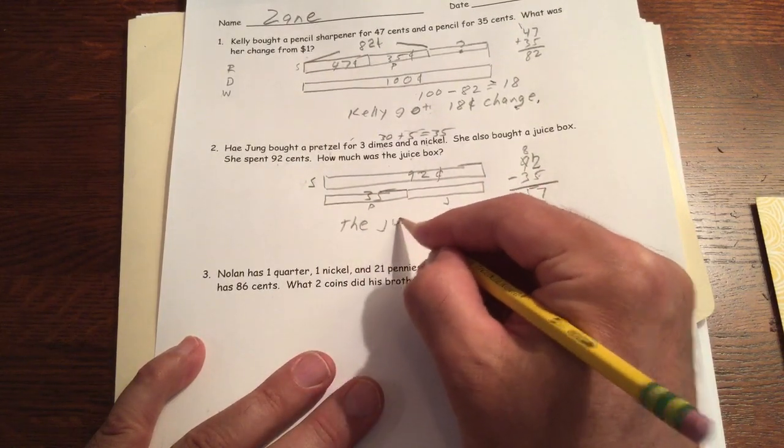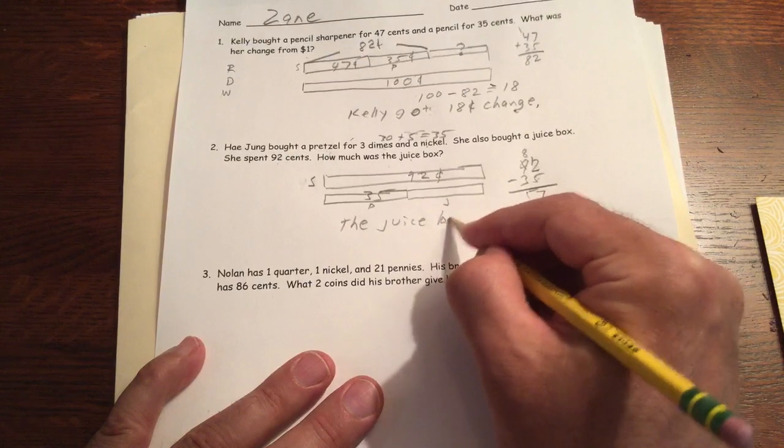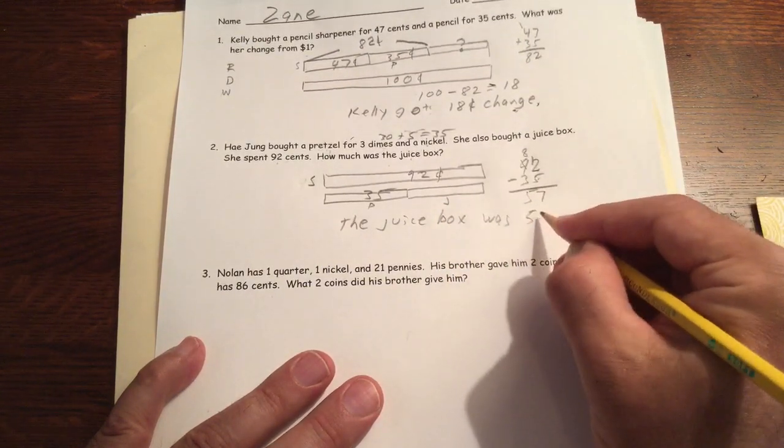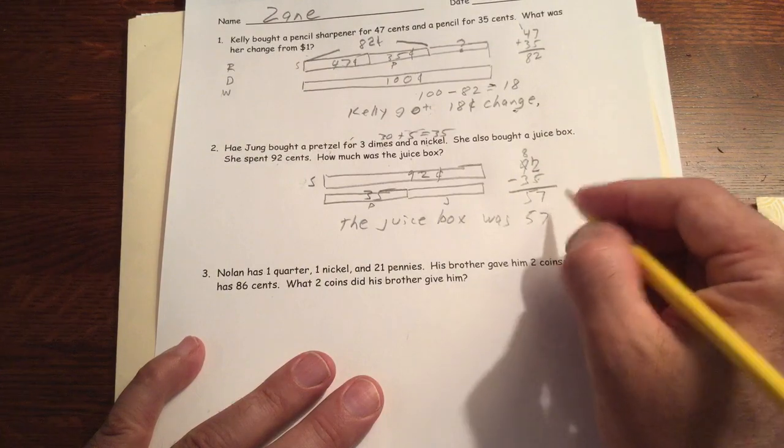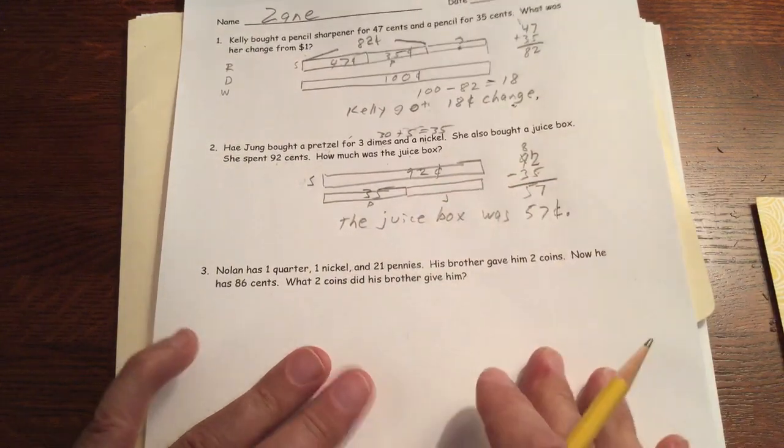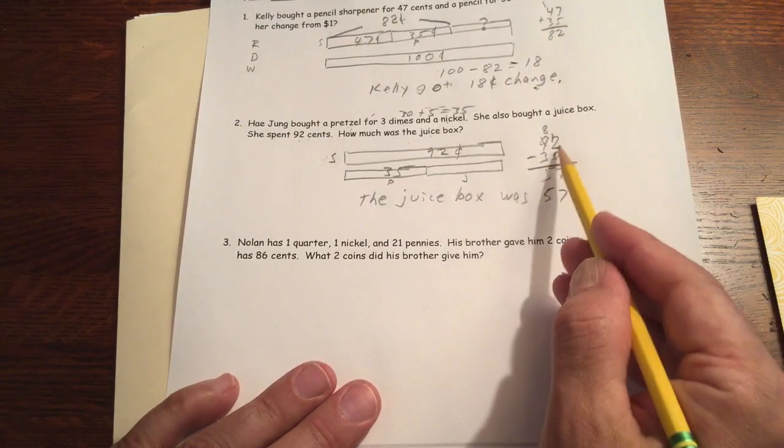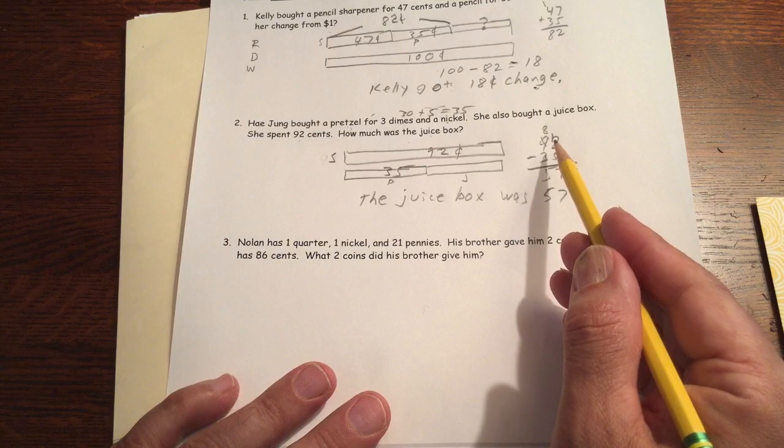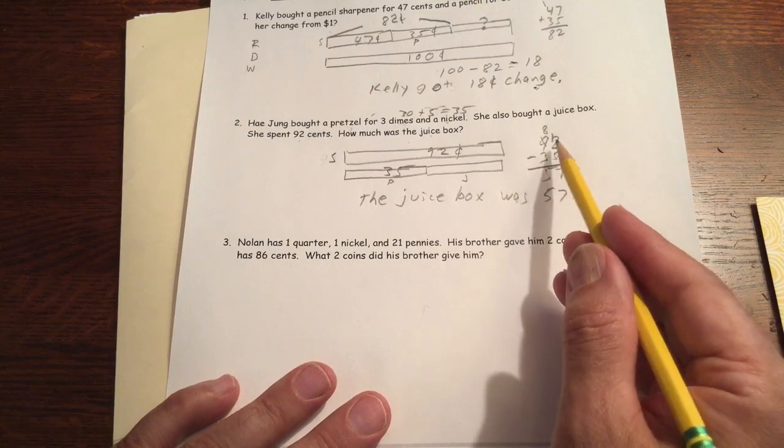The juice box was 57 cents. Now even if you can do the subtraction mentally, you still at least write out the equation to show the operation that you did.